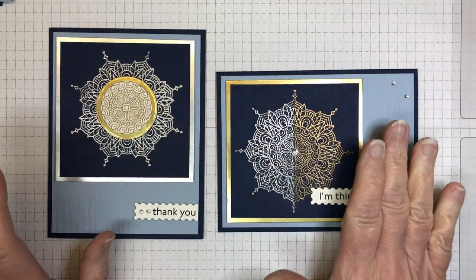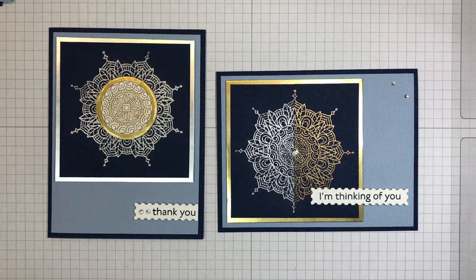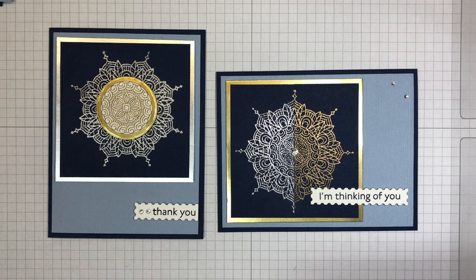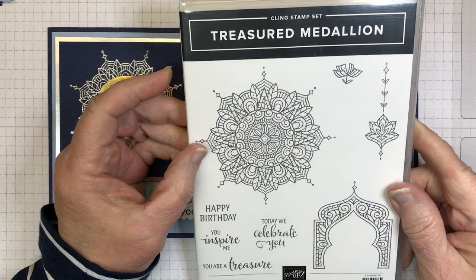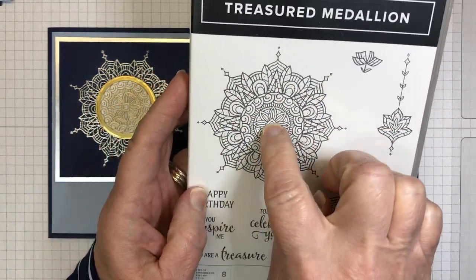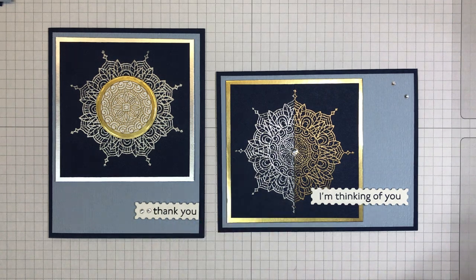It's a mix of the gold and silver, and it uses a stamp set that's coming out in the new mini catalog, and here it is. It's called Treasured Medallion. It's a gorgeous image right here, and that's what I'm going to highlight on these cards today. So let's get started.